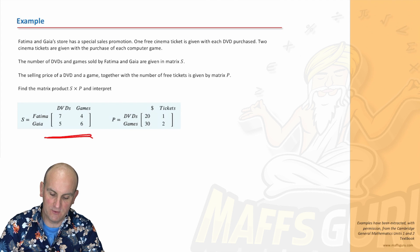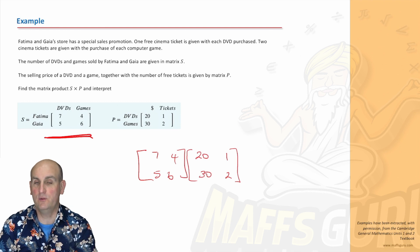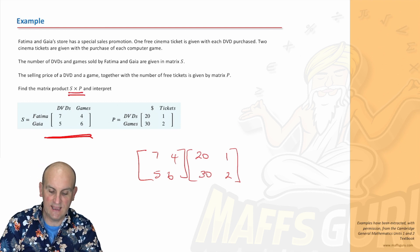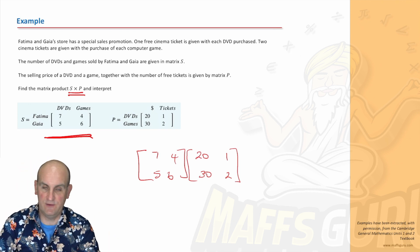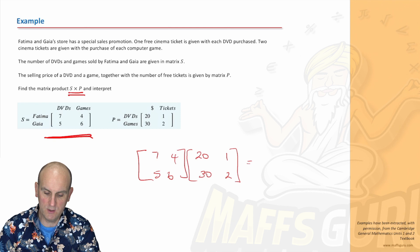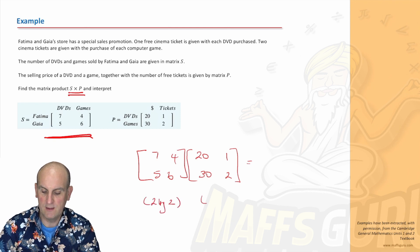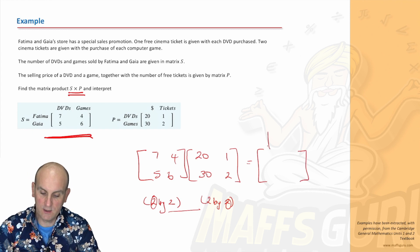Find the matrix product of S times P and interpret. Let's do that multiplication. We've got 7, 4, 5, 6, and we're going to multiply that by 20, 1, 30, and 2. Remember the order that we put the matrices is defined by the question. That's a two by two, and that's also a two by two. Are the middle numbers the same? They are. So my outer numbers are going to give me the dimensions of my final matrix.